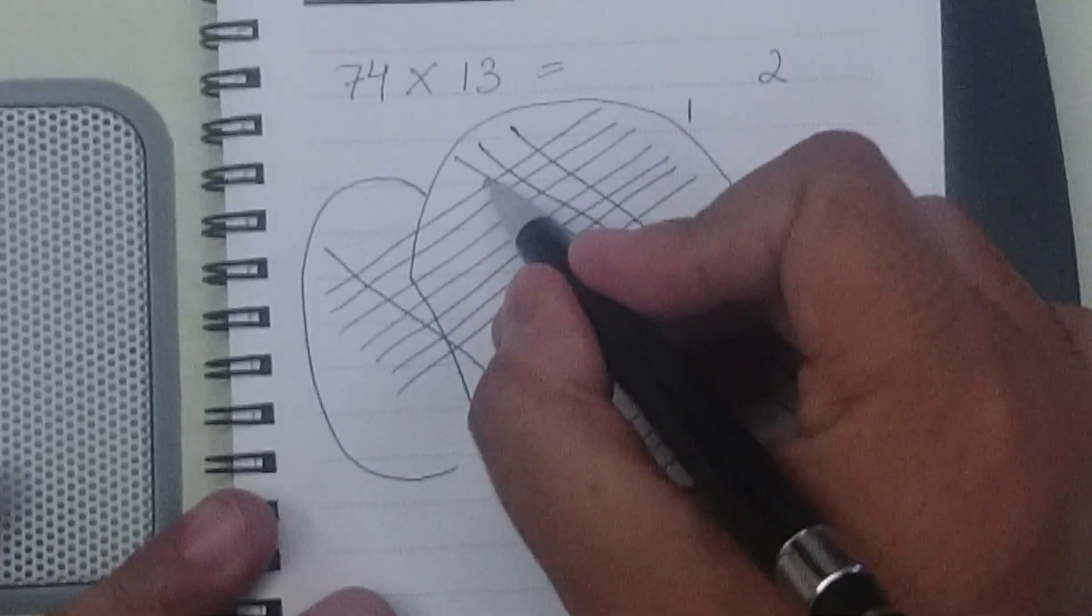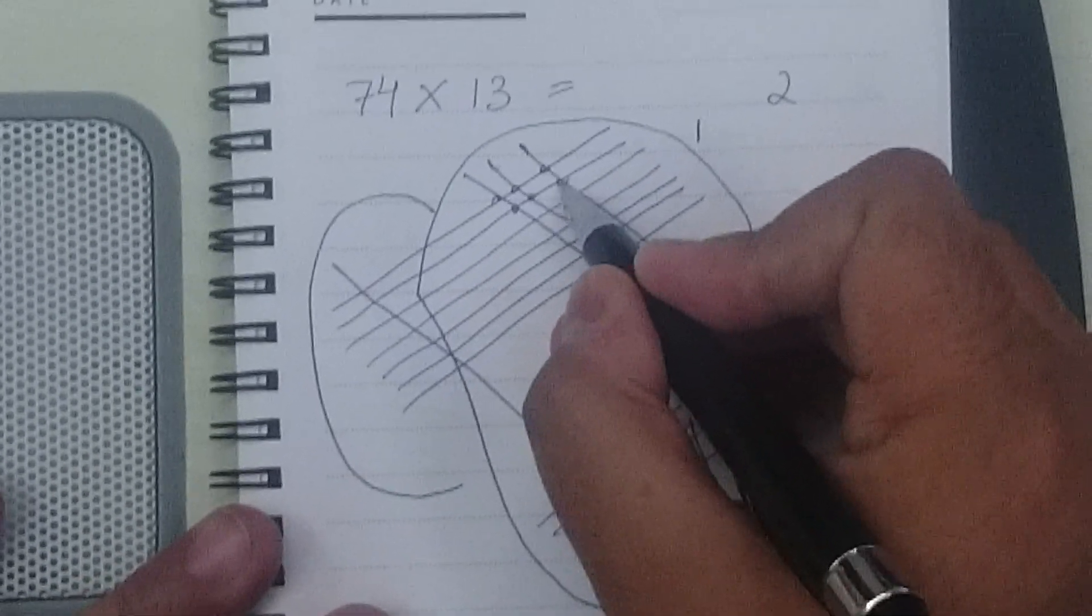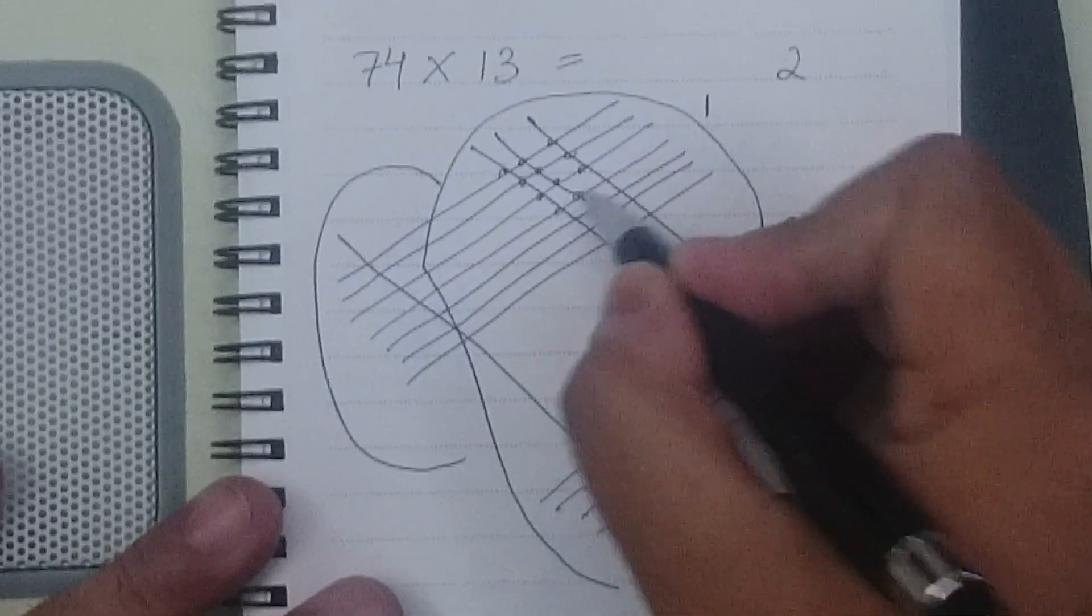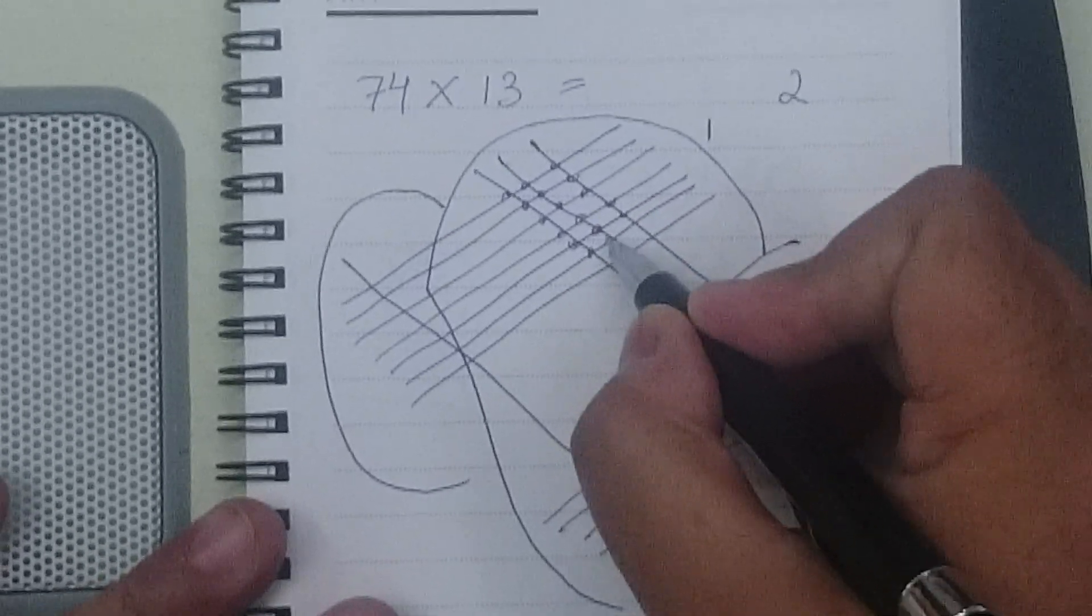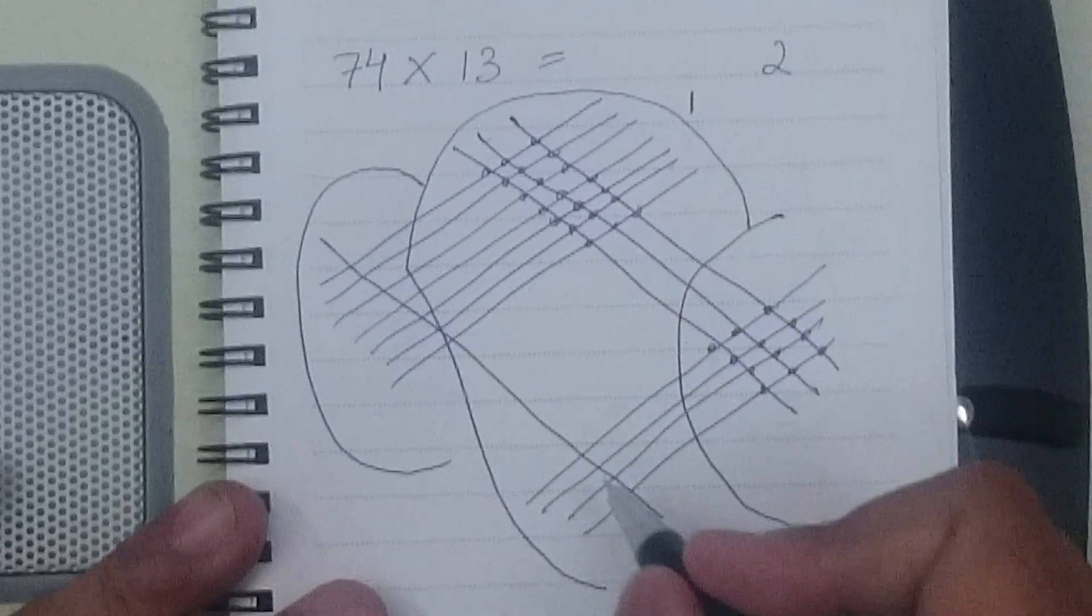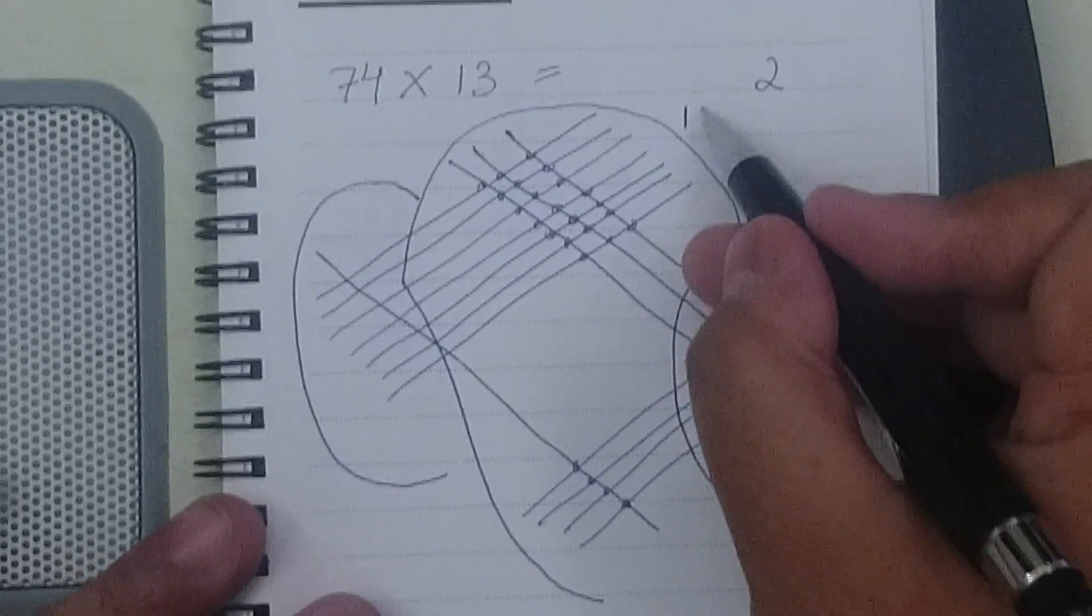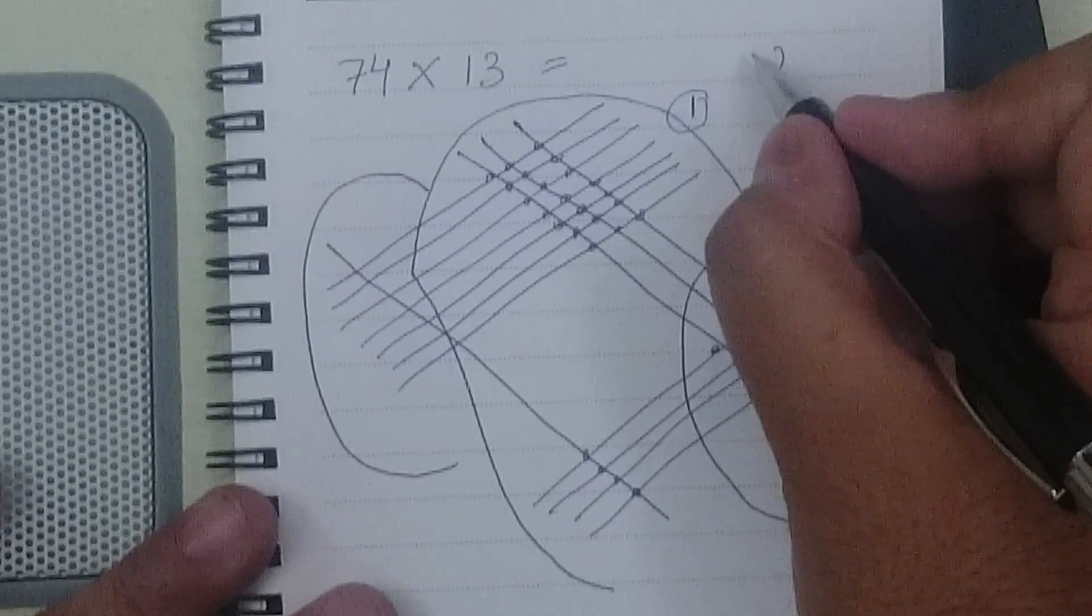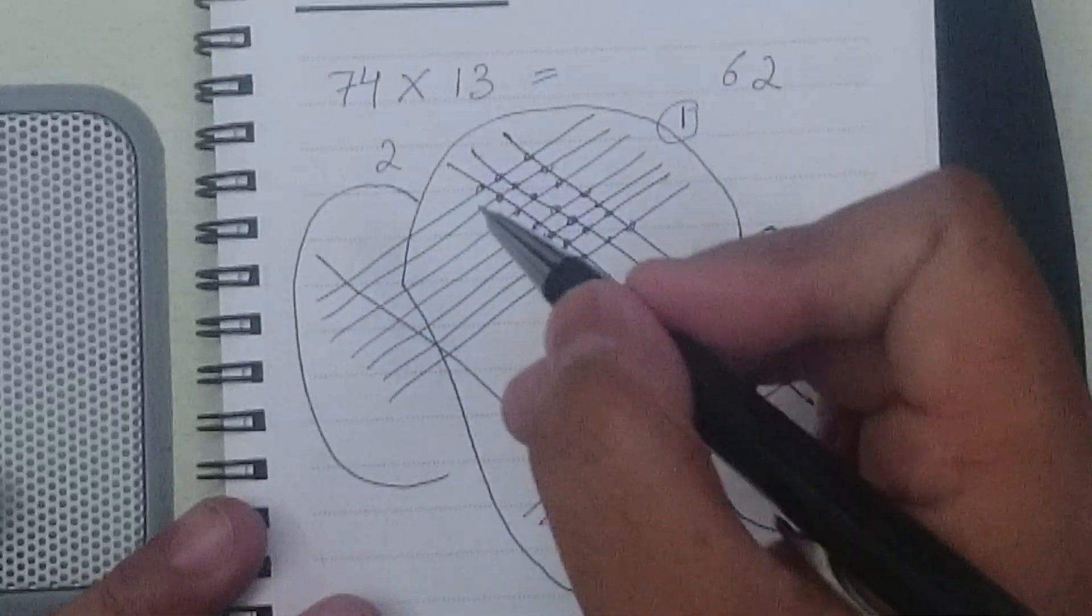Let's count in the second section. 1, 2, 3, 4, 5, 6, 7, 8, 9, 10, 11, 12, 13, 14, 15, 16, 17, 18, 19, 20, 21, 22, 23, 24, 25. 25 plus 1, you remember the carry over. So 25 plus 1 is 26 and 2 gets carried over to the third section.